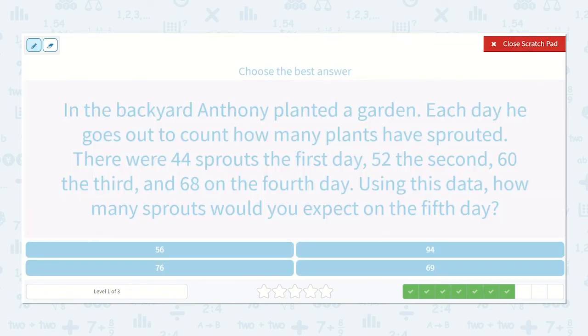In the backyard, Anthony planted a garden. Each day, he goes out to count how many plants have sprouted. There were 44 sprouts on the first day. 52 the second, 60 on the third, and 68 on the fourth. Using this data, how many sprouts would you expect on the fifth day? So we have 44, 52, 60, 68, and then our missing number.